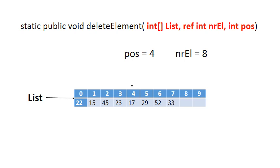So let's use this as an example of an array. It has 8 elements, therefore number of elements is 8. We want to delete the element at position 4, so when we're done with this method, the 17 should not be in the array anymore. Just look again at the parameters for this method: we've got the list, then number of elements which is a reference, and the position, which is an integer.